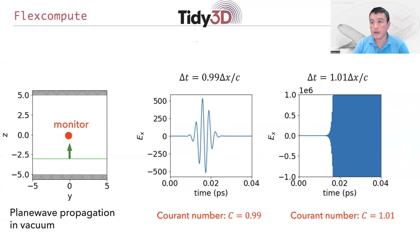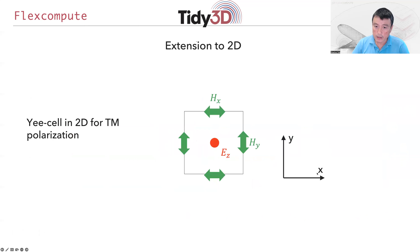Similar derivation can be carried out for two- and three-dimensional systems. In two dimensions, here is a derivation. This is a single E cell with an electric field Ez component at the center, surrounded by four magnetic components—Hx and Hy components on the edges of a square. This is used for simulating TM polarization.